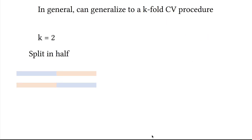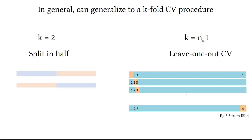You can generalize to a k-fold cross-validation procedure. The lowest k can be equal to two, where we just split our data in half, or k equals to n minus one would be the largest number of folds, where we have as many folds as number of observations. In this case this kind of cross-validation is called leave-one-out cross-validation.